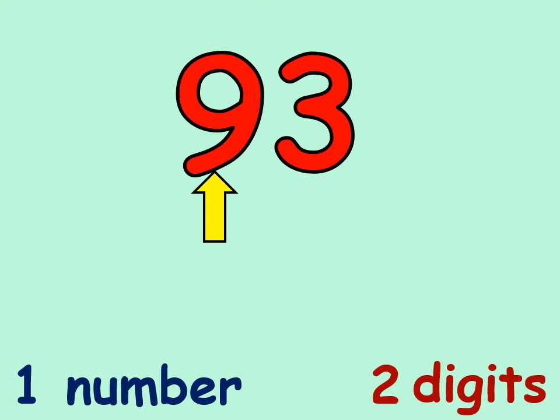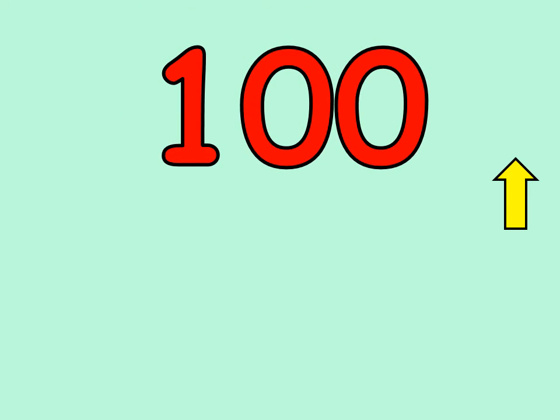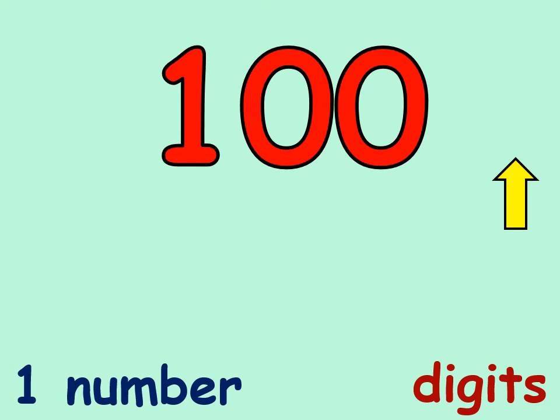You ready for a hard one? I'll help you with the next one, but I want you to do the next one by yourself first. How many numbers is that? That's right. It's one number. What is the number? 100. That number is 100. Now, how many digits does it have? One, two, three. Did you say three? You're right. Three digits. It's one number. 100. And it has three digits.